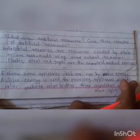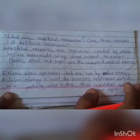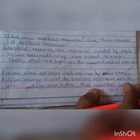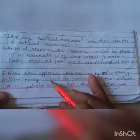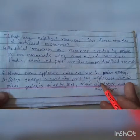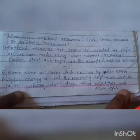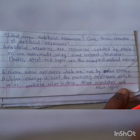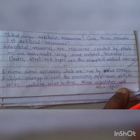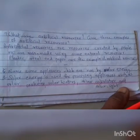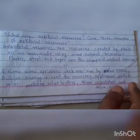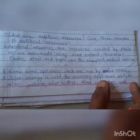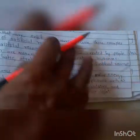Name some appliances which are run by solar energy. Solar energy is used for appliances such as solar cooker, solar heater, solar calculator and solar lights. These appliances are all run by solar energy.